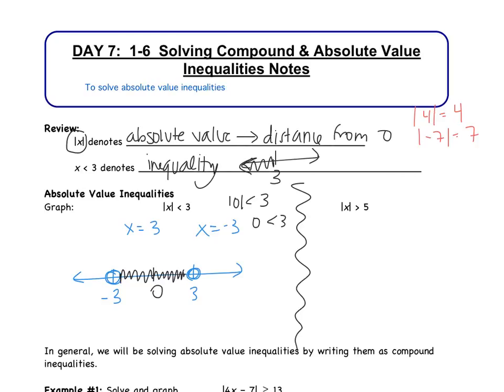Let's test one more: the absolute value of 1 is less than 3. How far is 1 from 0? It's 1 away, so 1 is less than 3 — true, that works. Anything outside negative 3 to positive 3 will not work. The absolute value of 7 is 7, so 7 is less than 3 — that does not work. That's why we do not shade the outside. So that's the less than case.